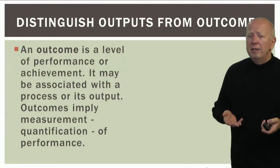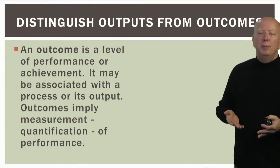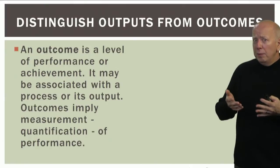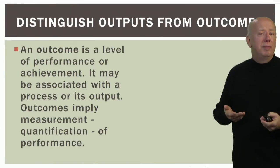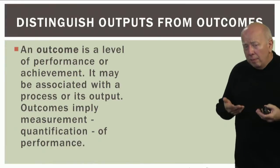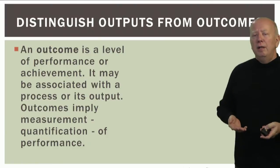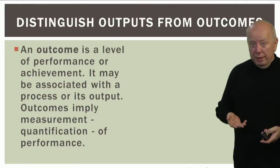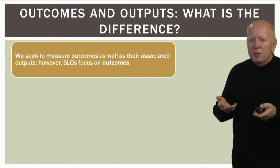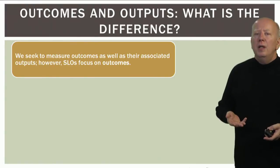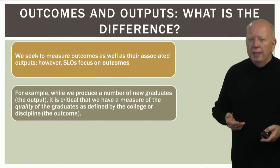What is an outcome? An outcome differs from an output in that it's a level of performance or achievement. It can be associated with a process or its output, but outcomes imply measurement — that is, a quantification of performance. An outcome has to do with the degree to which an output meets a measure of quality that we've already determined in our programs. For SLOs, the focus is on outcomes.